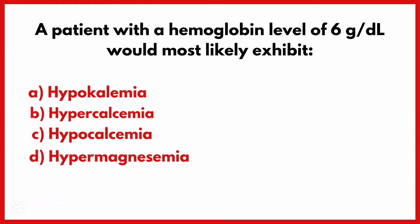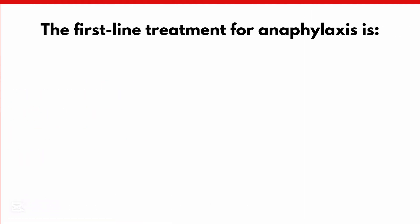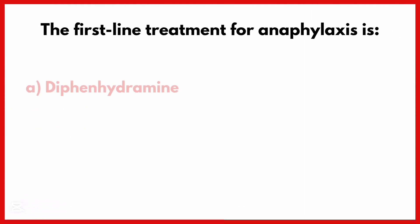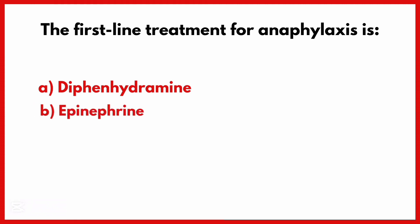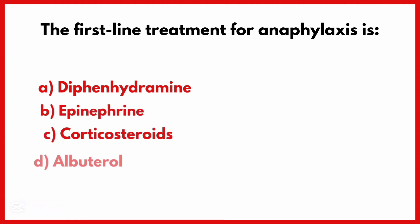A patient with a hemoglobin level of 6 would most likely exhibit — the correct answer is option C: Hypocalcemia.